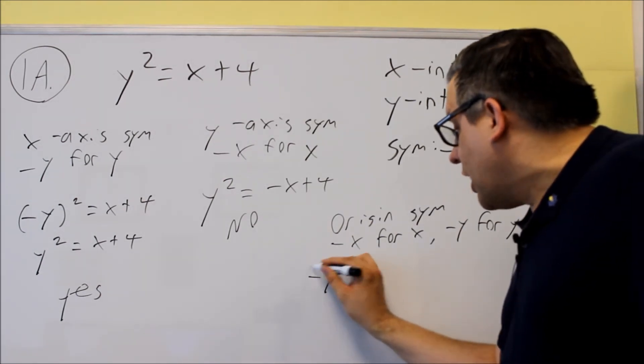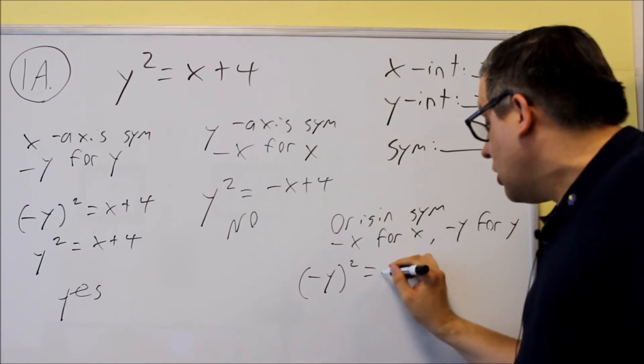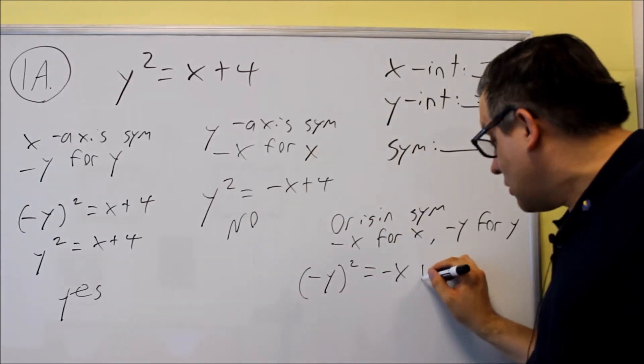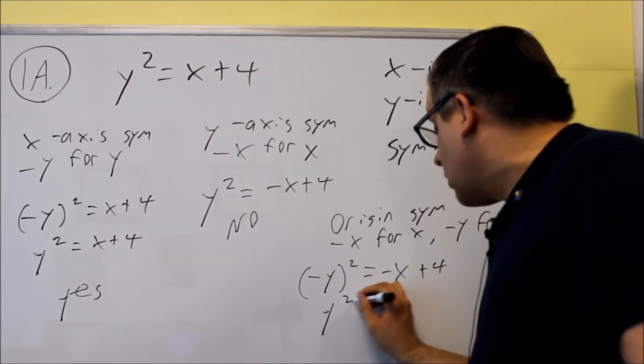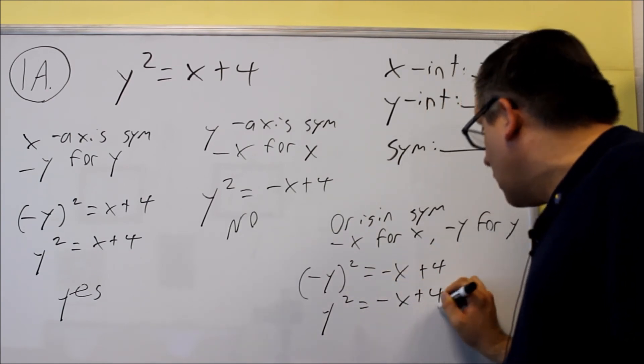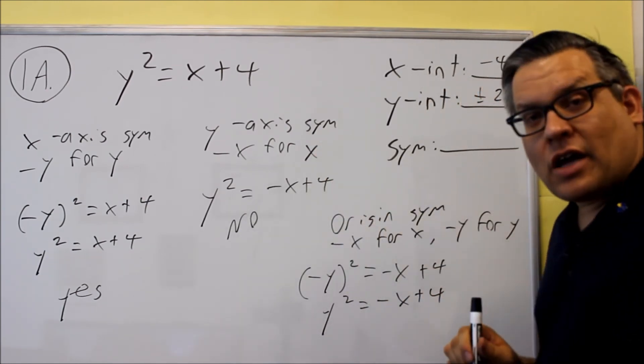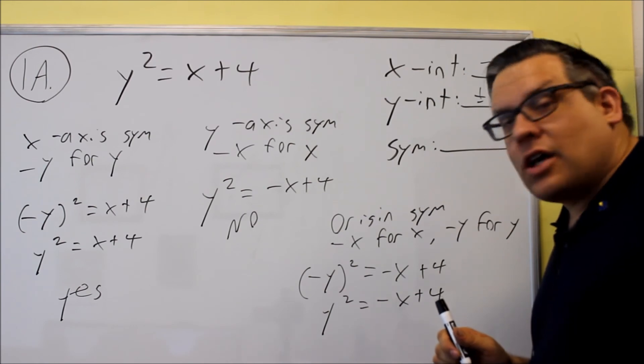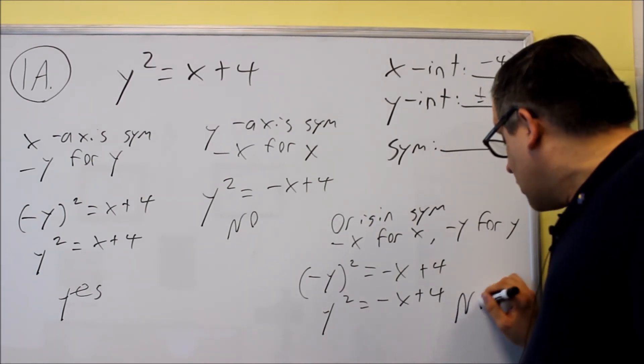We put a negative y in for the y in the original one, put a negative x in for the x, and I get y squared equals negative x plus 4. That's the same result as we had last time when we already said that we can't make that one look like the original one. So this is no also.